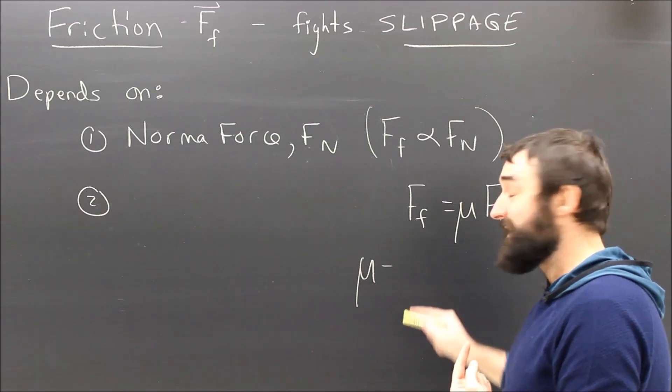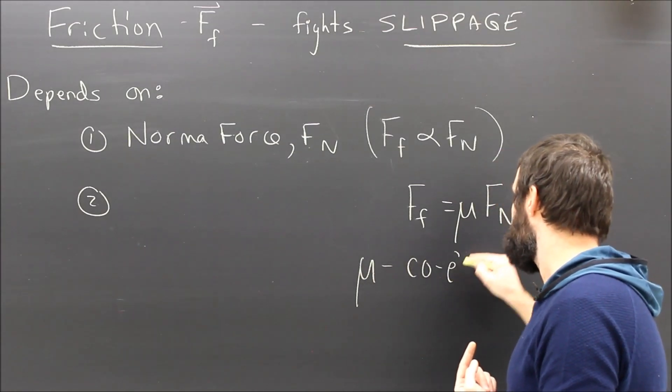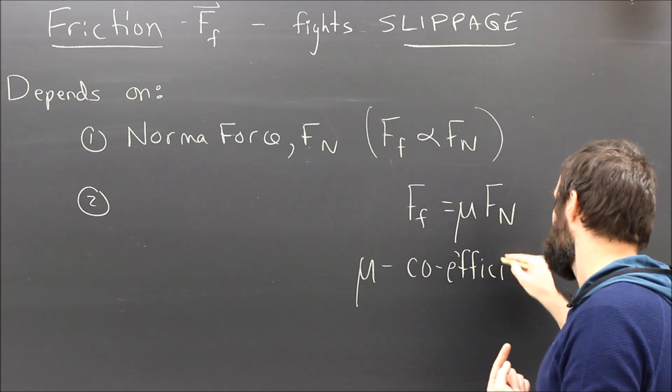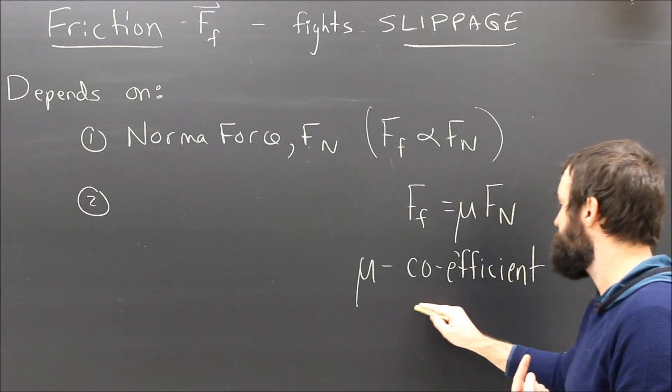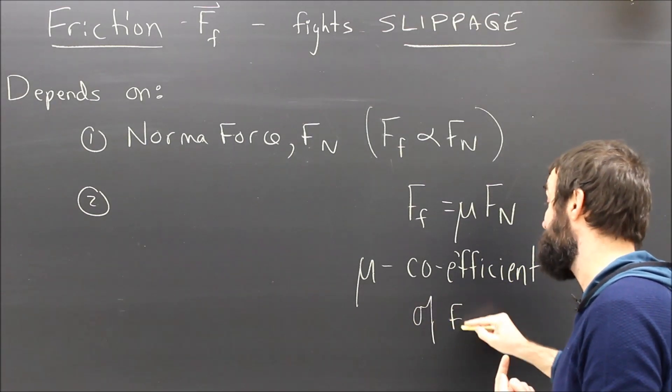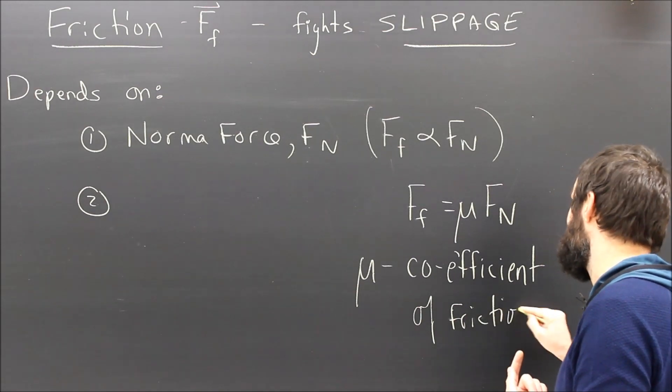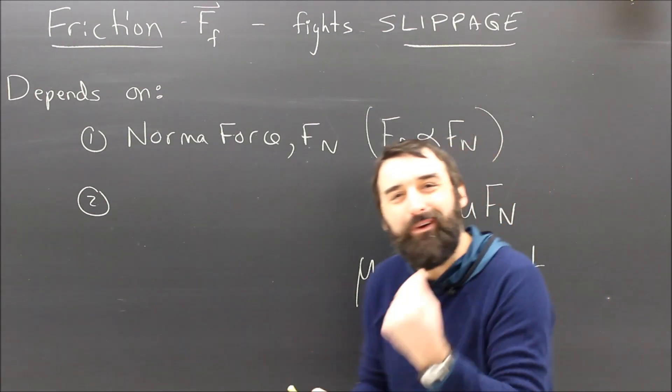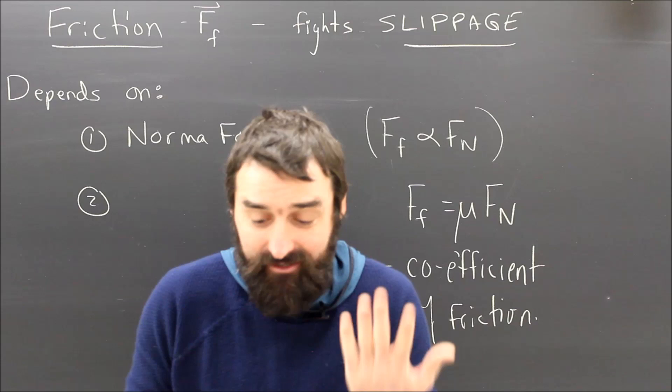So, mu, this Greek letter, stands for the coefficient of friction. Coefficient of friction. Because it is the coefficient that allows you to calculate friction. But what does it actually mean? What does it represent in real life? And I don't think that's too complicated to understand.